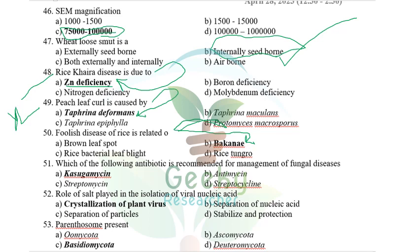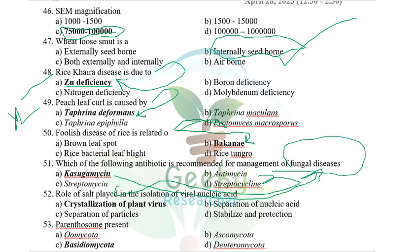Which antibiotic is recommended for management of fungal diseases? Antimycin, streptocycline, and streptomycin are all antibacterial. Kasugamycin can be recommended for fungal diseases — especially for rice blast disease. The answer is kasugamycin.